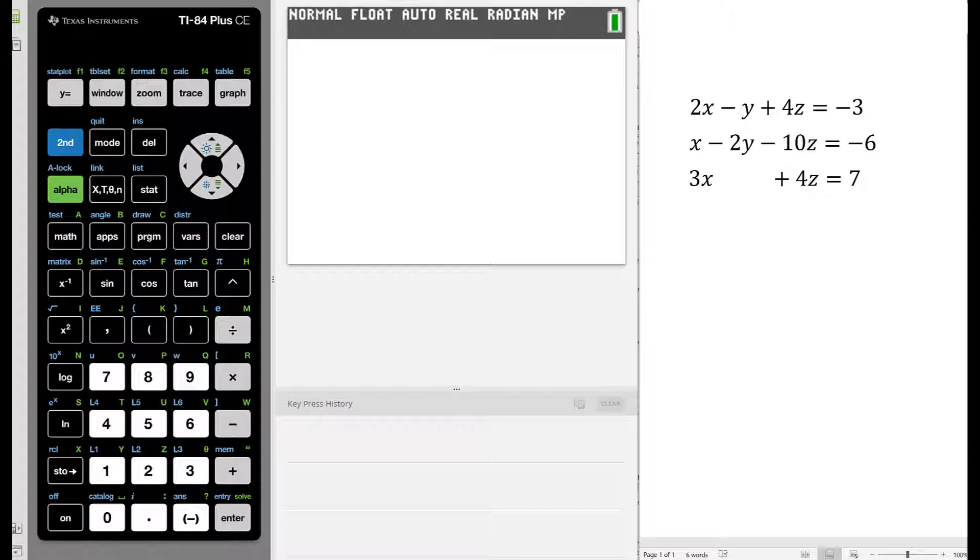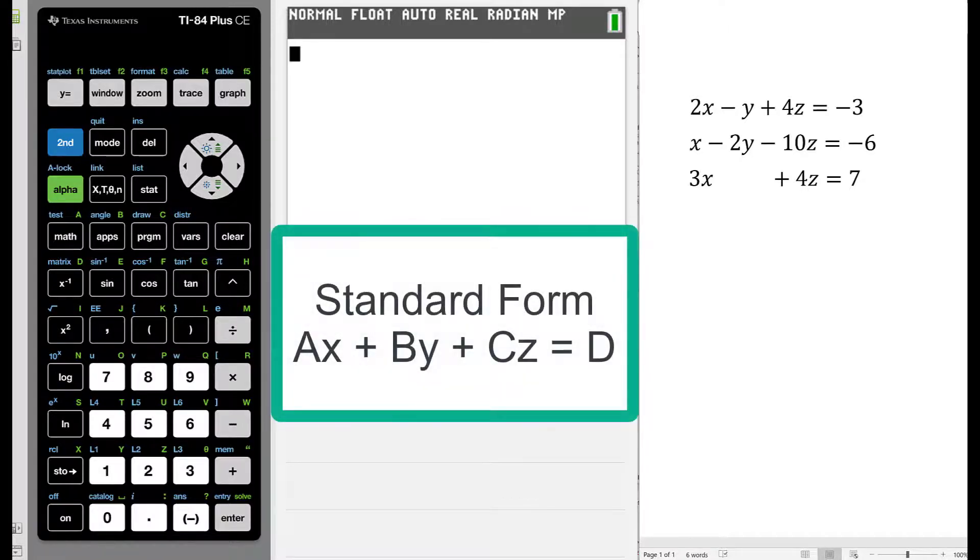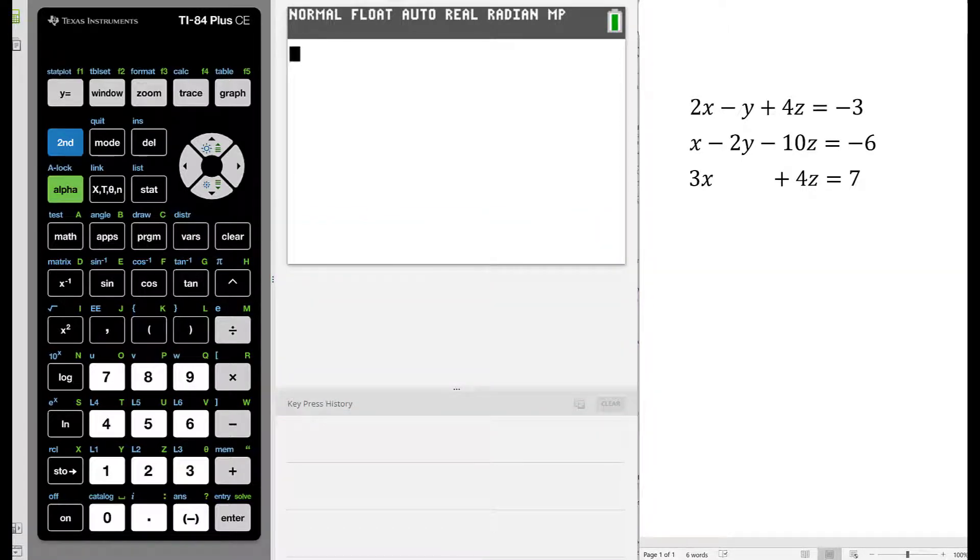It is very important that your equations are written in standard form. That is, it is written in the form ax plus by plus cz equals d, where we have all of our variable terms written on the left-hand side of the equal sign in alphabetical order, and the constant term is written on the right-hand side of the equal sign.